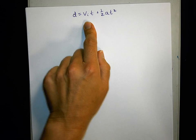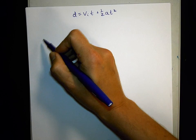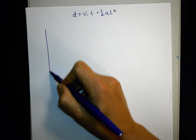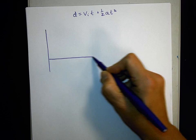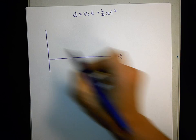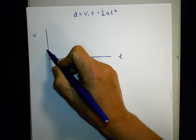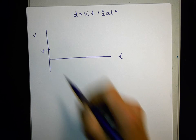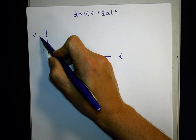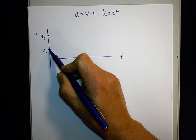Again this is the equation that we're headed toward, and I just want to show you where that's from. I want to sketch a generic velocity graph, one that says velocity is a function of time, where I start at one velocity, I'll call that v initial, and I end at another velocity, I'll call that v final.